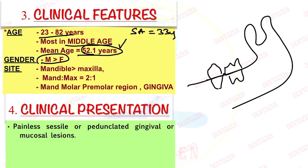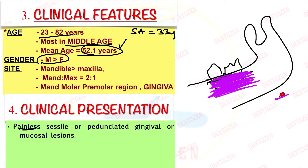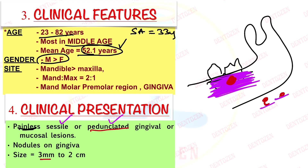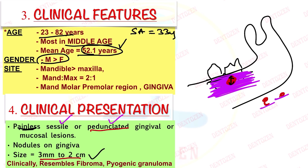Clinically, it can present as a painless lesion over the gingiva, which can be sessile or pedunculated. Sessile means the lesion may be directly present on the gingiva, or it may be pedunculated, meaning it is attached to the gingiva with the help of a stalk or pedicle. It presents as a nodule over the gingiva, with a size ranging from 3 mm to 2 cm, usually less than 1.5 cm. Clinically it can resemble fibroma or pyogenic granuloma, but only on histopathology can we identify it as ameloblastoma when we see the ameloblastic epithelium.